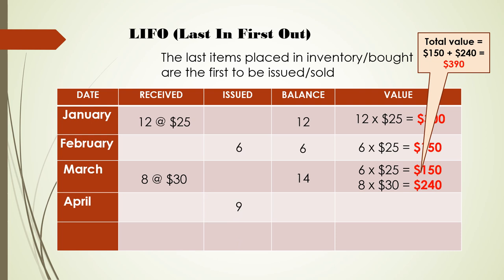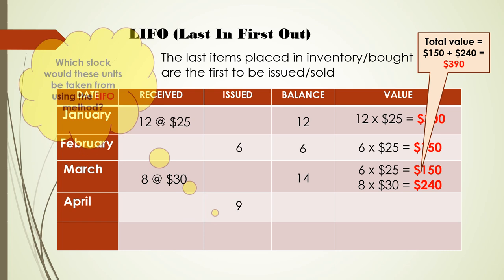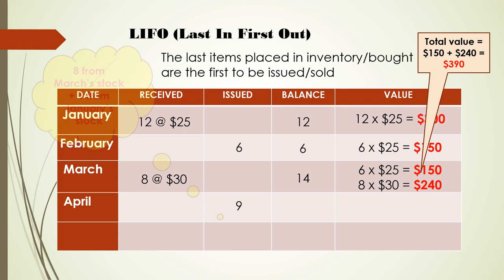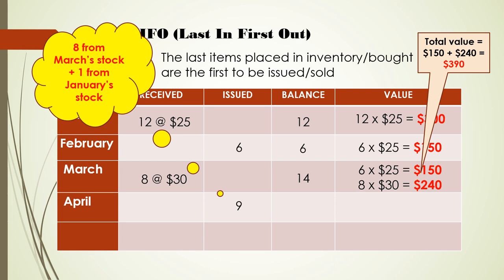In April, 9 reams of paper were issued from the inventory. Using the last in first out method, where would these 9 reams be taken from? We are reminded that last in first out means the last items placed in inventory are the first to be issued. Our balance of 14 reams comprises 6 reams from January stock and 8 reams from stock received in March. Therefore, using the LIFO method, these 9 reams would come from 8 reams from March's stock and 1 ream from January's stock.